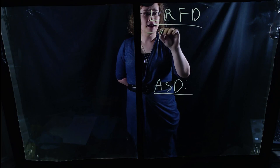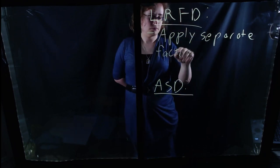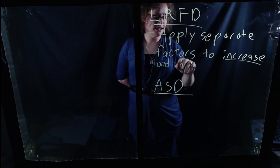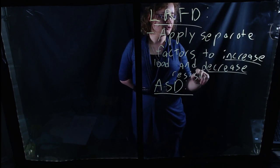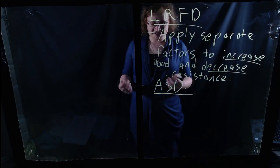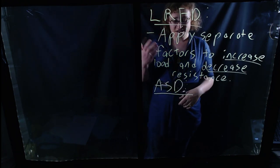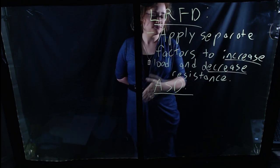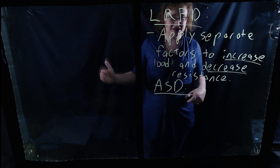With LRFD, you're going to be applying separate factors to increase load and decrease resistance. In other words, we're going to consider the loads to be larger than our best estimates, and we're going to consider our resistances — our strengths, capacities, etc. — to be less than our best estimates. As we discussed in our previous lecture, the idea of breaking them up into separate factors is that you can then tune them using separate probability analyses, and also considering separately the consequences of failure, to achieve the same uniform level of safety across the entire structure for all load cases.